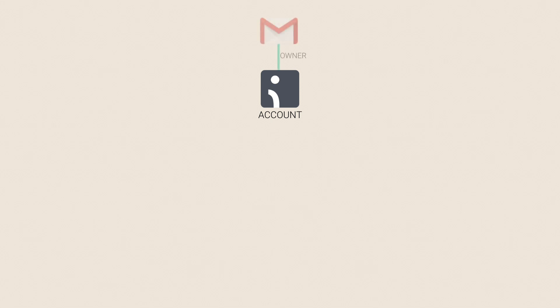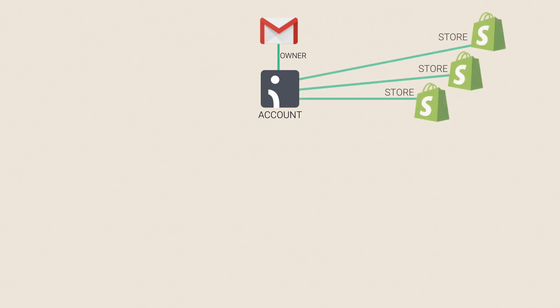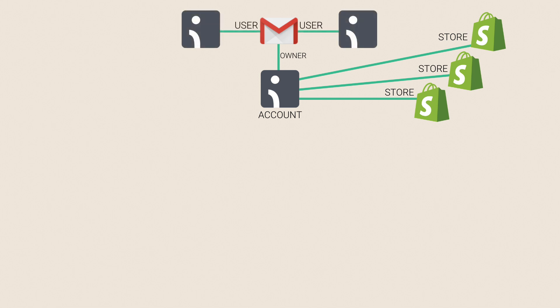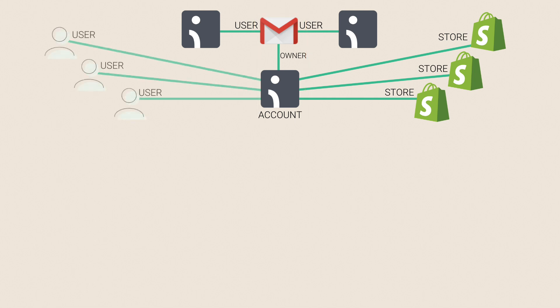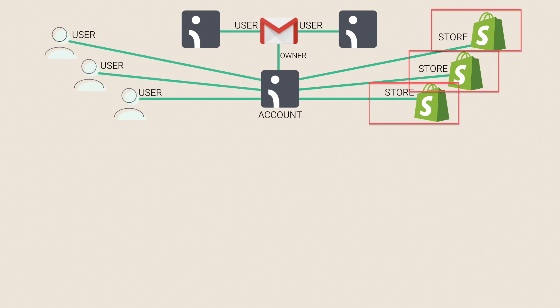When creating an account with OmniSend, keep in mind that only one OmniSend account can be created using your email address. However, you can connect multiple stores to the same master account, and your email can be added as a user to multiple different accounts at the same time. Simply put, one account can have only one owner, but can have multiple different users and multiple different stores connected to it.